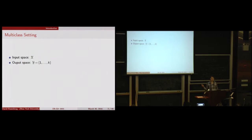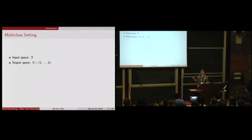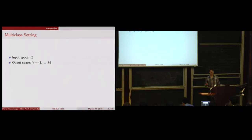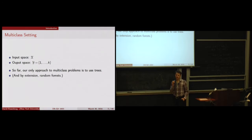In the multi-class setting, the input space is arbitrary X, and the output space is a discrete set of classes 1 through K. Initially, we don't make any assumptions about relations between the elements of the output space. So far, our only methods for attacking these problems are trees — decision trees, classification trees. In those cases, it was easy to make things multi-class as opposed to just binary.